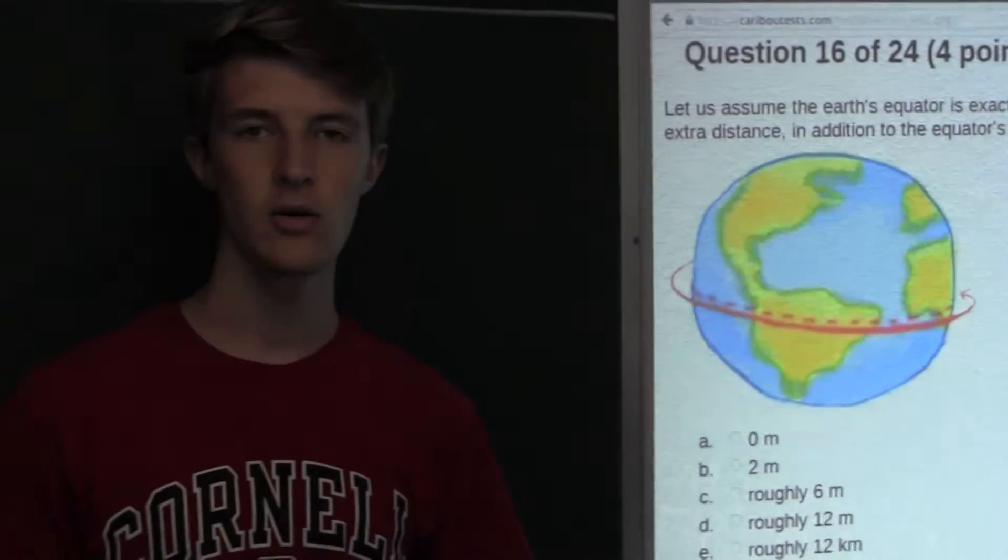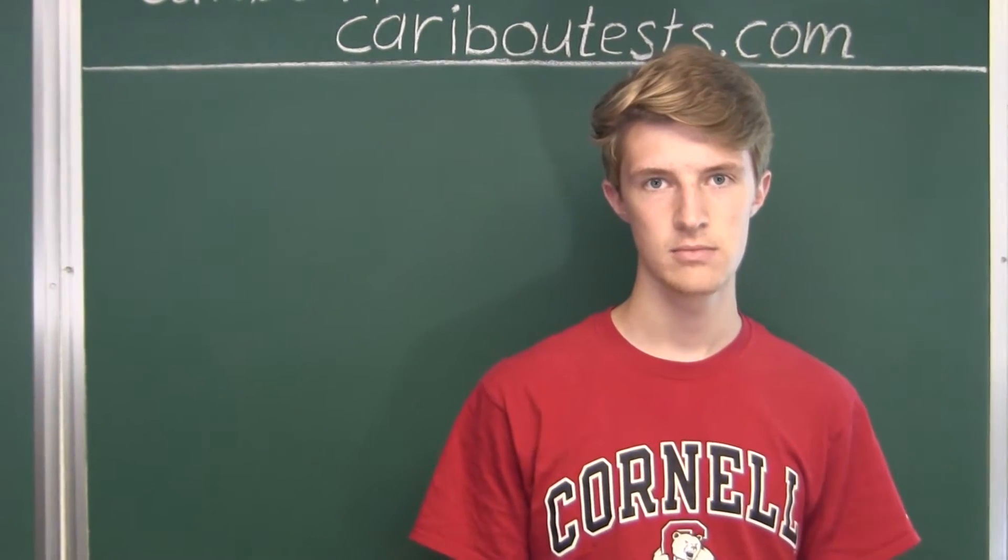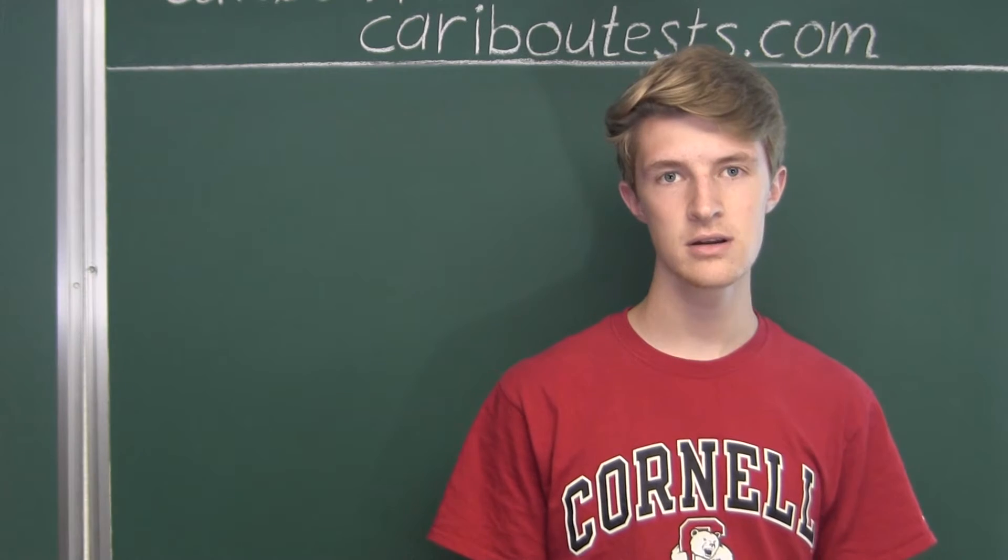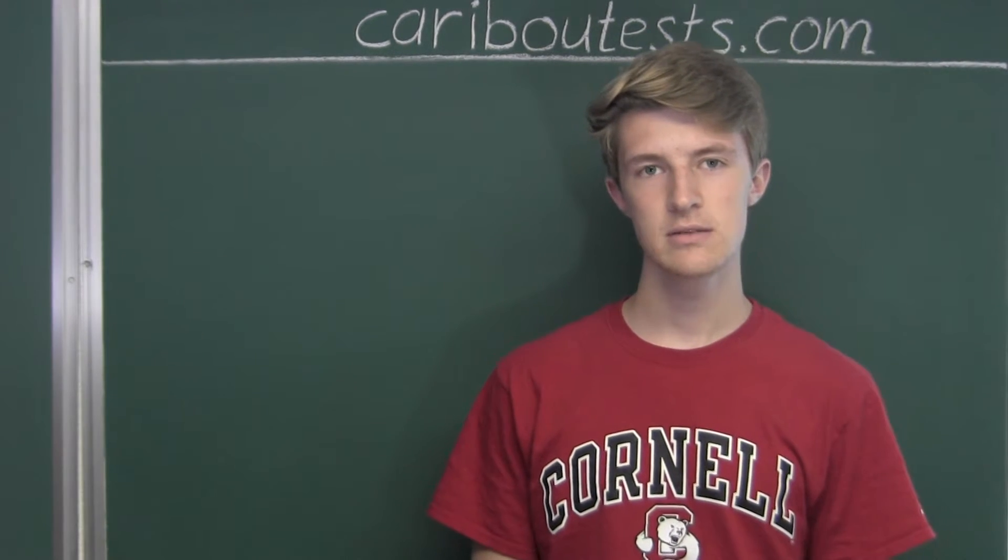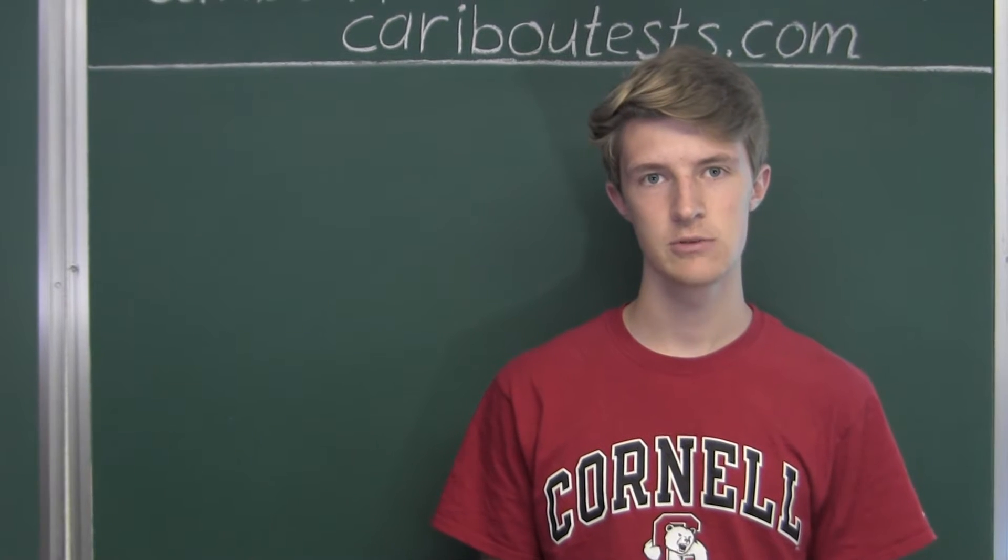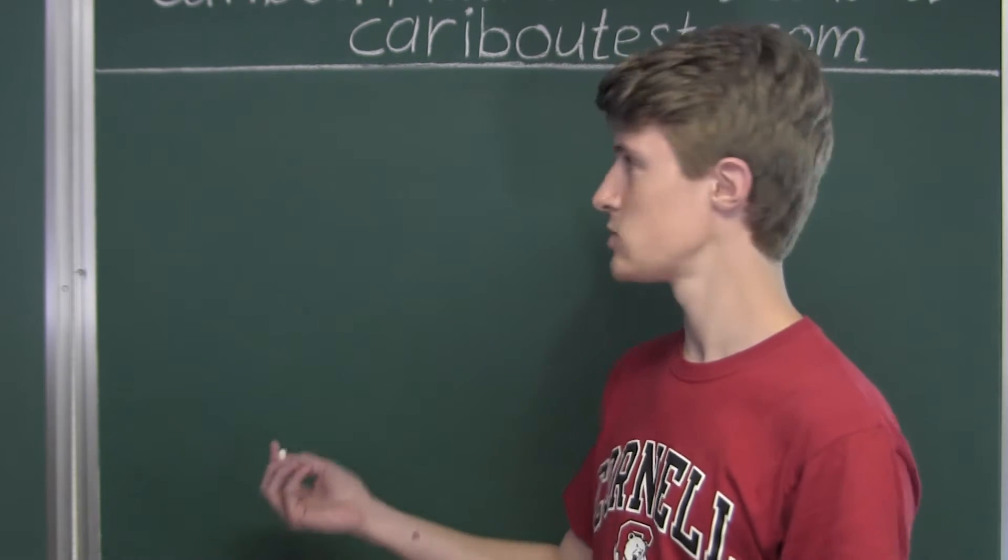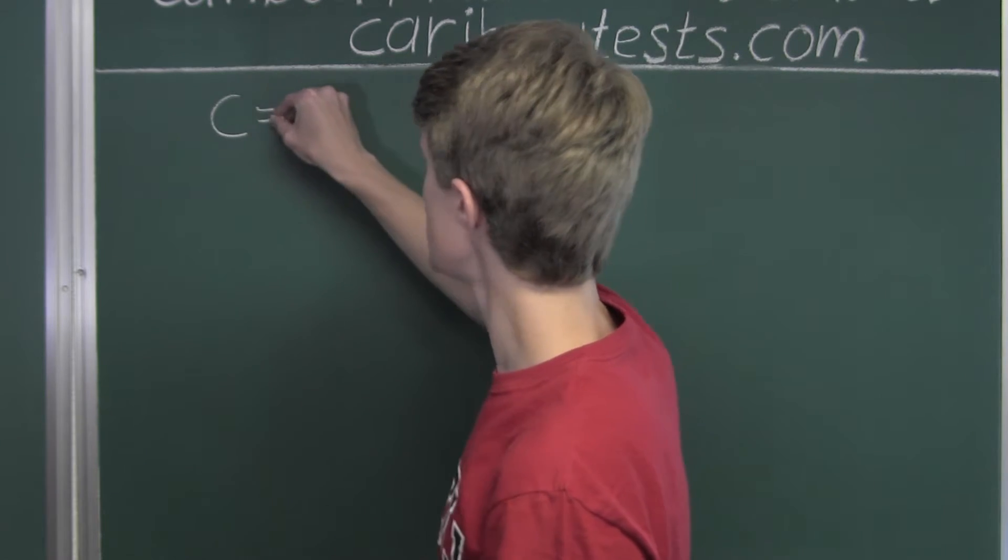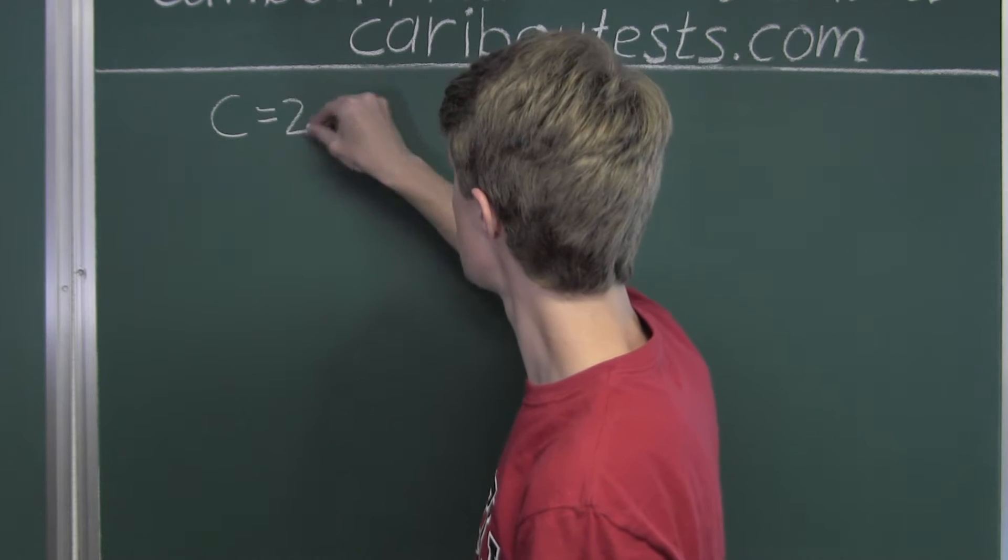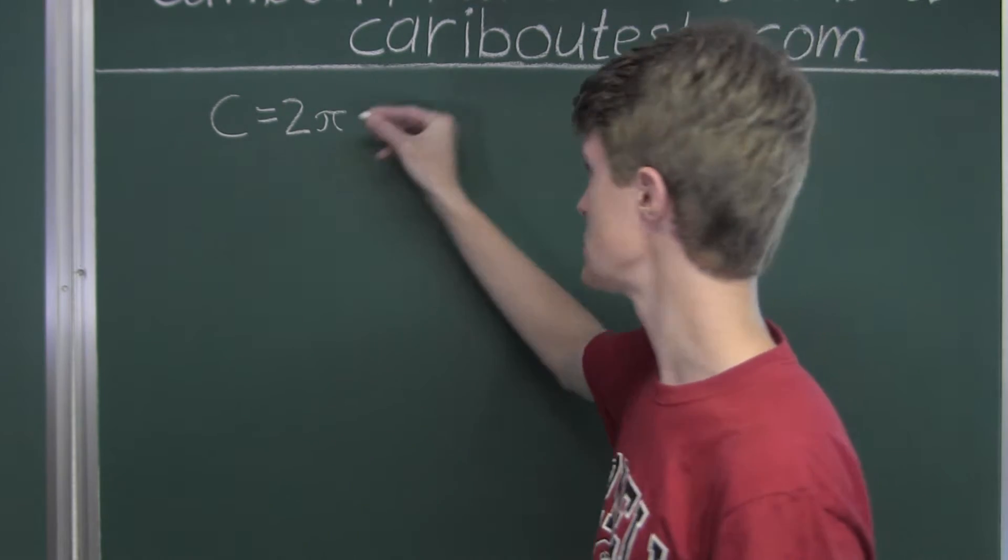Now the equator has the shape of a circle, and the length of the equator is the circumference of that circle. We need to know the formula for the circumference of a circle. That formula is C, the circumference, equal to 2 times pi times the radius of that circle.